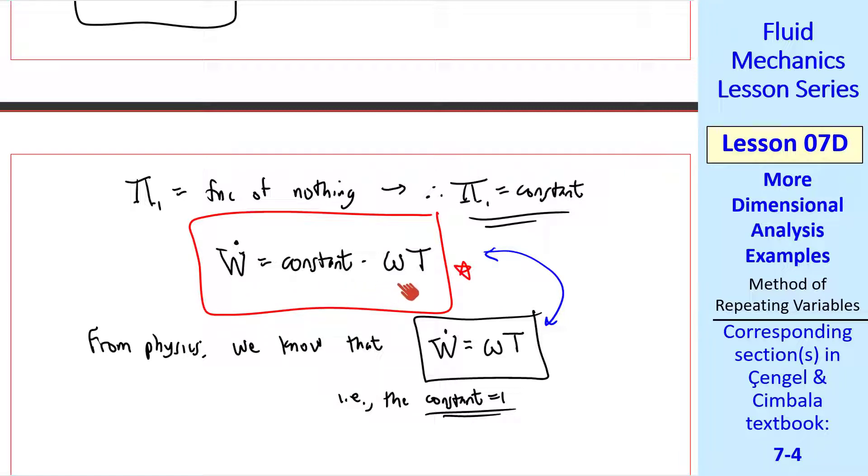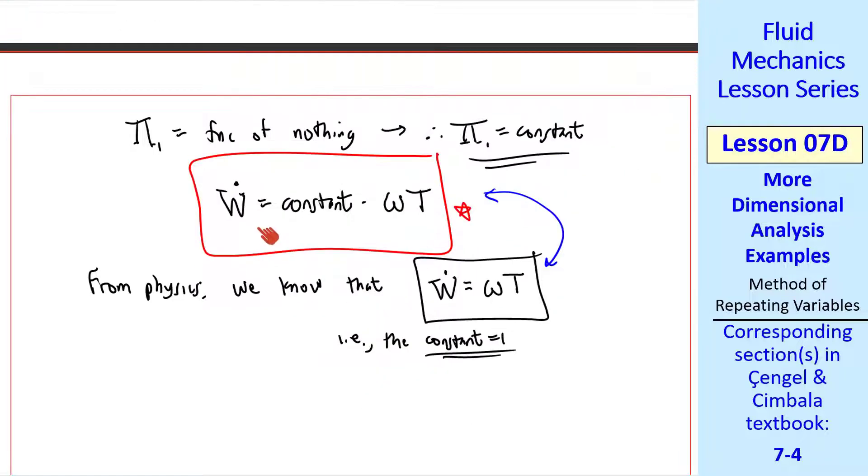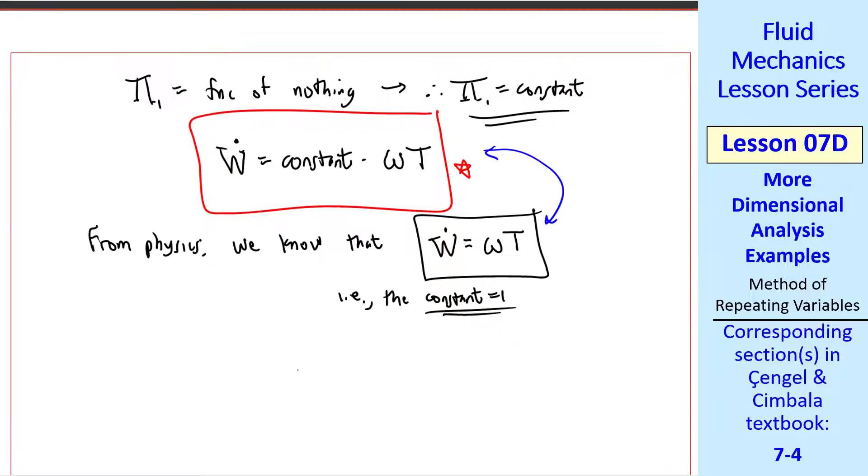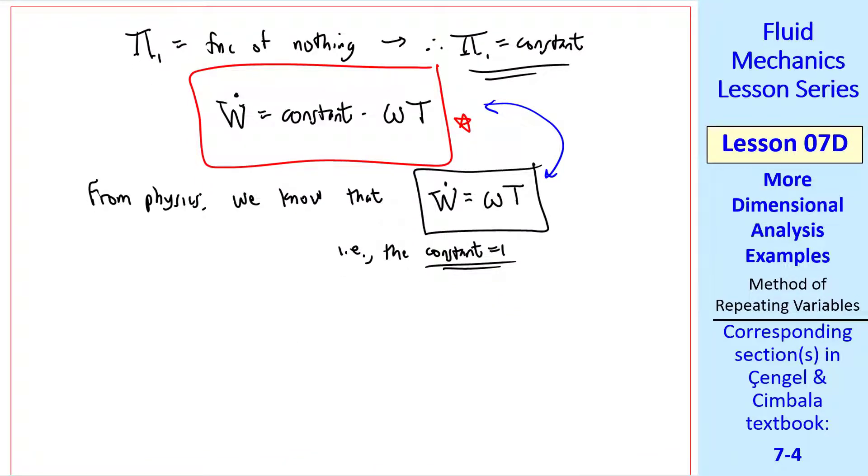All we knew at the beginning were the dimensions of these variables. This is another example of where we can predict trends. For example, if you double omega, you double the shaft power. If you reduce the torque by half, your power goes down by half as well. I comment again that we derive this equation without knowing any physics, which is pretty powerful. I remind you that we cannot determine the constant from dimensional analysis. Our result from dimensional analysis is this equation with an unknown constant. But again, either some physics or one simple experiment will get you the constant.